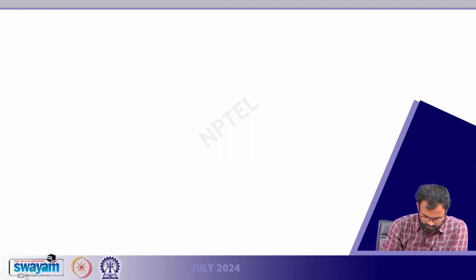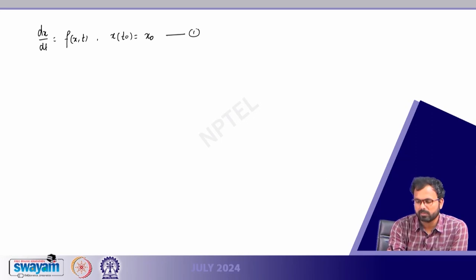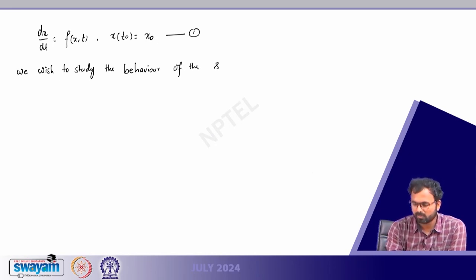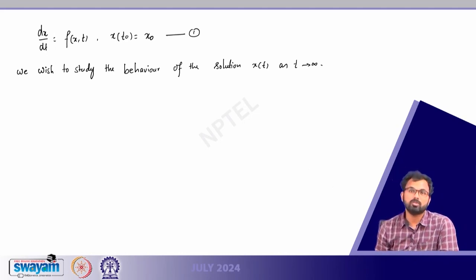Basically we have this initial value problem: dx/dt = f(x,t) — writing the scalar version — and x(t₀) = x₀. Let us call it equation number 1. We want to study the behavior of the solution x(t) as t tends to infinity. This is what we are trying to learn: what happens when t tends to infinity to the solution x(t).